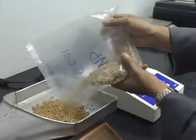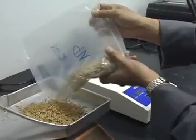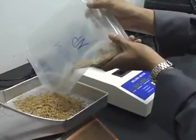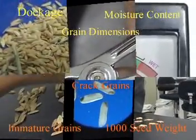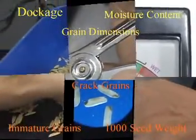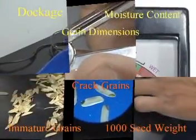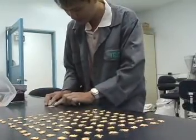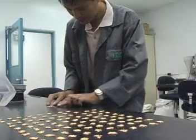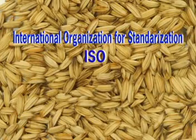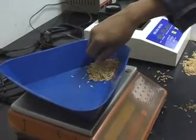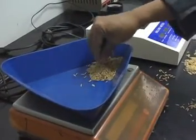When measuring the physical quality of paddy, there are six features to examine: cracked grains, grain dimensions, immature grains, dockage, 1,000 seed weight, and moisture content. Paddy will be classified based on the International Organization for Standardization, or ISO, for paddy. This international standard lays down the minimum specifications for husk rice.